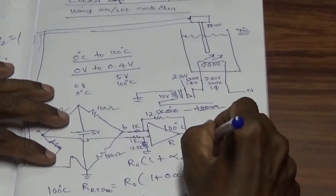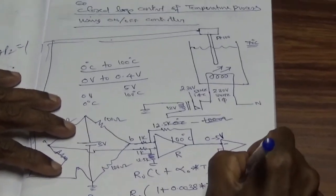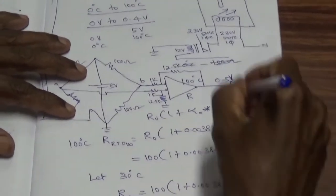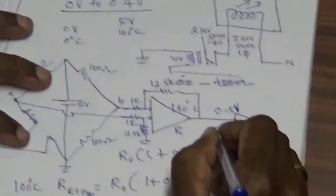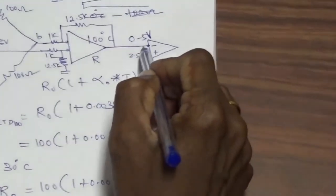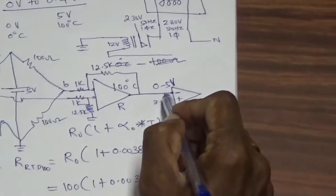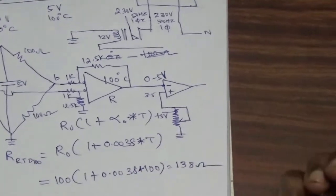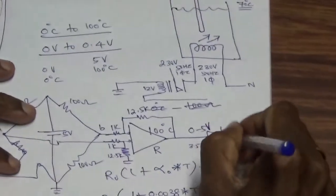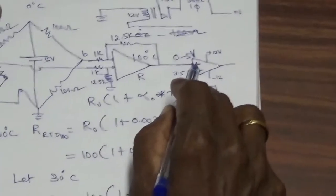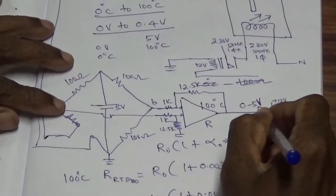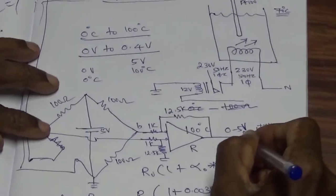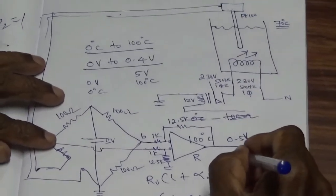The transmitter output is given to the inverting terminal of the comparator. A potentiometer is connected to the non-inverting terminal; it is connected to +5 volts, so by adjusting it we can set 3.5 volts. If the process variable exceeds 3.5 volts, the output becomes −12 volts. If below 3.5 volts, the output goes to +12 volts, because the open-loop op-amp is powered by ±12 volts.